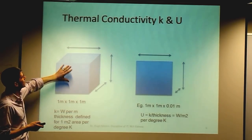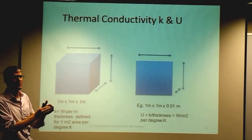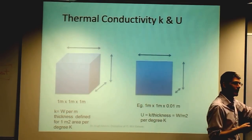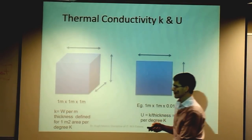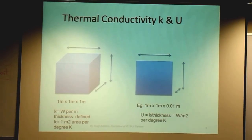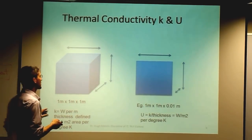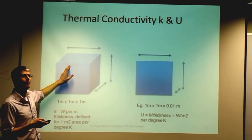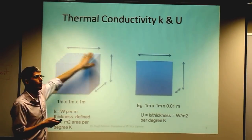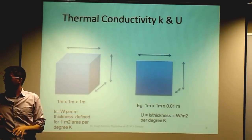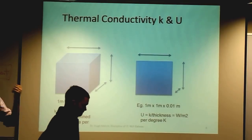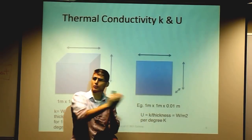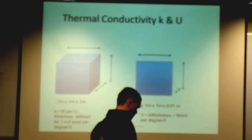The main difference between them is that conductivity is defined for a block of material that's a meter thick, whereas the U-value is defined for a structure that might be x millimeters or x centimeters thick. Thickness really is the only distinguishing feature between them. Otherwise they describe the amount of energy in terms of joules that transfer per unit time, per second, per meter squared area, for every temperature degree differential. How quickly will energy flow from hot to cold? That's essentially what the U-value or conductivity means.